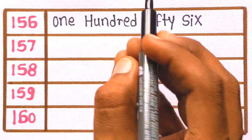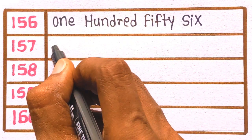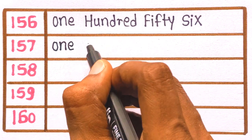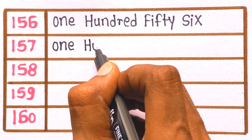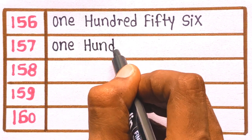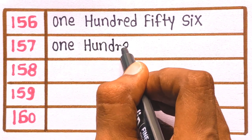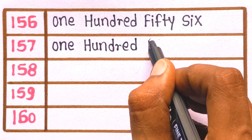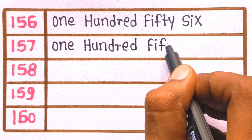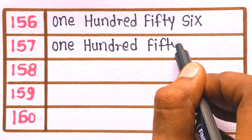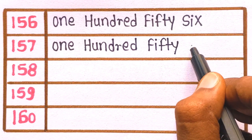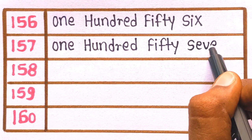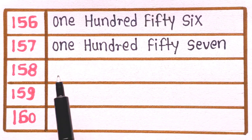One hundred. O-N-E, one. H-U-N-D-R-E-D, one hundred. F-I-F-T-Y, fifty. S-E-V-E-N, seven. 157 is one hundred fifty seven.